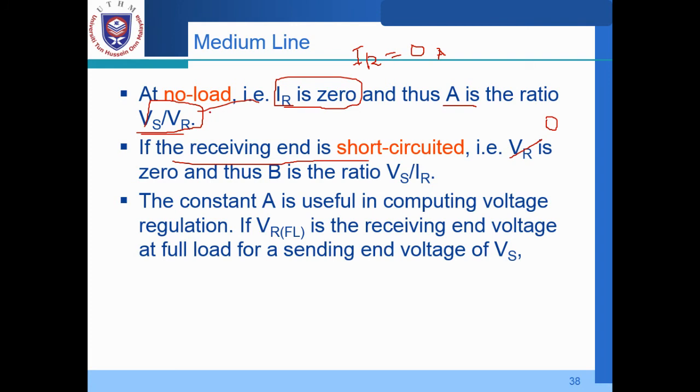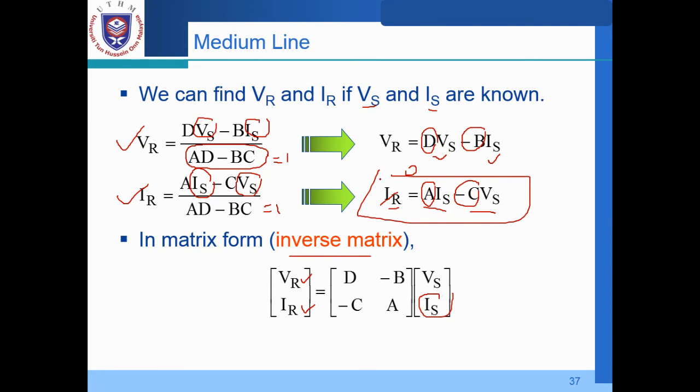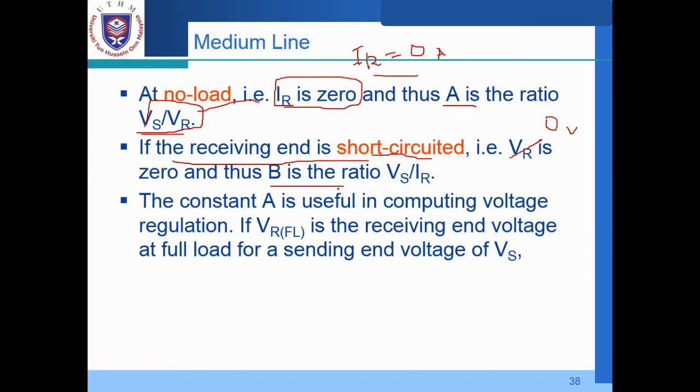So if the receiving end is short circuit. So the end part of the circuit, of the transmission line is being short circuit. So VR equal to 0. So no-load, we mean open. We mean open circuit, IR equal to 0. But short circuit, so we have a straight line over here. So we have VR equal to 0. And thus, again, from this expression, since we have VR equal to 0, so rearrange, and we can get the ratio VS over IR is actually defined by this B.